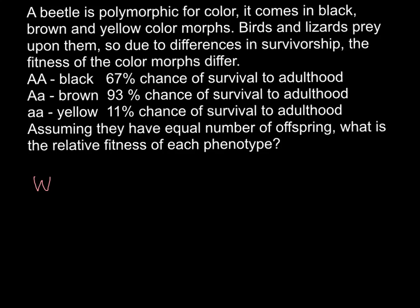We calculate relative fitness by choosing the most fitted genotype or phenotype. As you can see, the most fitted phenotype here is brown, which is heterozygous and has a survivorship of 93%. We use this absolute number as our base for calculations. So the relative fitness of this genotype — heterozygous Aa — would be 93 divided by itself, giving us 1. In the relative fitness system, 1 is the biggest number and 0 is the smallest, so all data falls between 0 and 1. This is very useful for bringing different experiments onto the same scale.